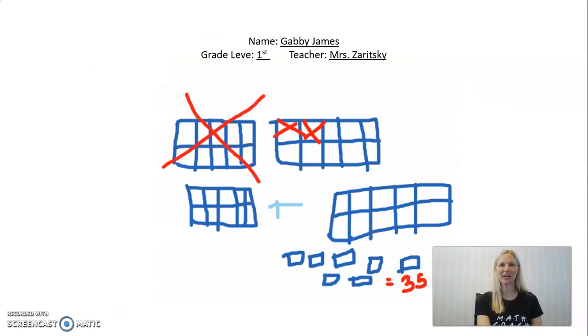Our winner is first grader Gabby James from Ms. Zeritsky's class. Gabby started by drawing three 10 frames, which is the same as 30, to show the 30 cookies that Allie is starting with. And then she crossed off this entire 10 frame and these two squares, which is showing that she is subtracting 12 cookies because of what Layla ate.